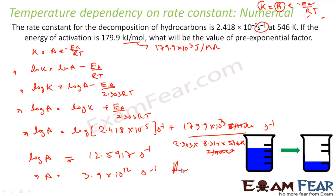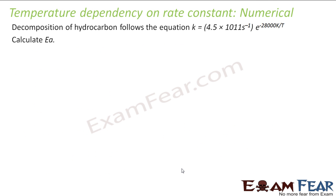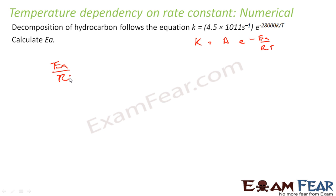That is just mathematics — nothing complicated here. The next question says the decomposition of a hydrocarbon follows a given equation and you need to find the value of Ea. K is nothing but A e to the power minus Ea by RT. If you compare these two equations by matching the exponent coefficients, you can compare minus Ea by RT with minus 28000 K divided by T.